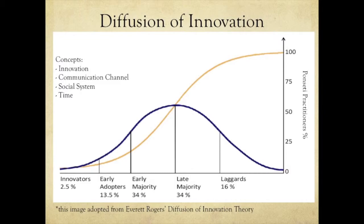The S-curve superimposed on this image represents the percentage of the population utilizing that particular innovation. Rogers talks about a few key concepts involved in diffusion of innovation theory: one is the innovation itself; two is the communication channel used; three is the social system; and four is time.